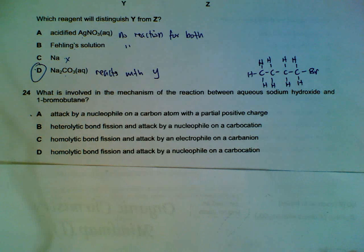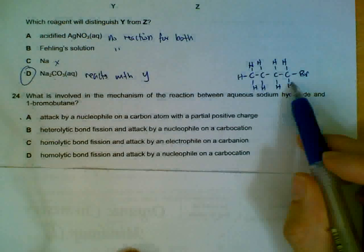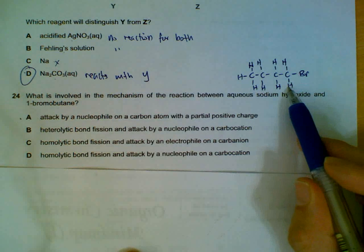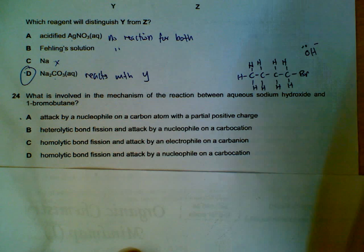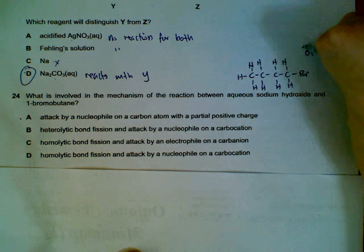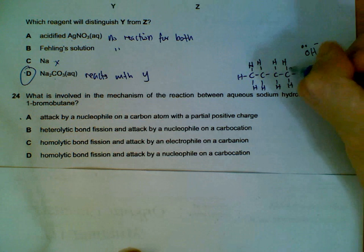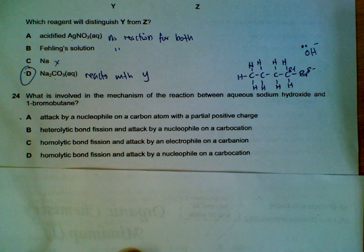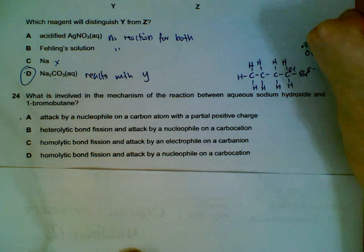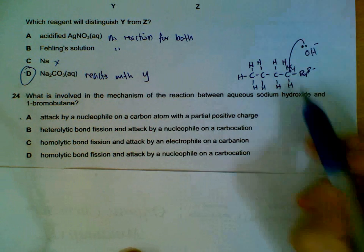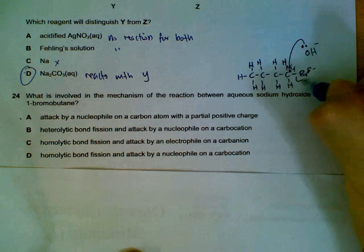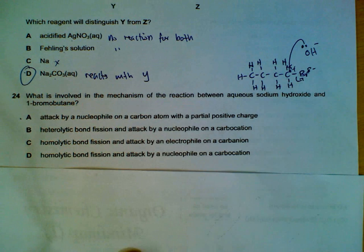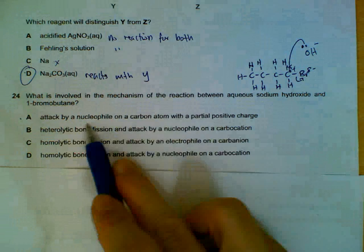Reaction between sodium hydroxide and bromobutane. So we have bromobutane here. Sodium hydroxide. We have our nucleophile. This is partially positive because bromine is partially negative. So this nucleophile will attack this partial positive carbon. And then this bond will be breaking at the same time. Which is described by A.